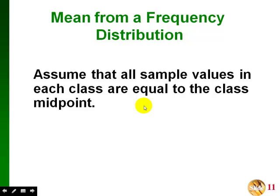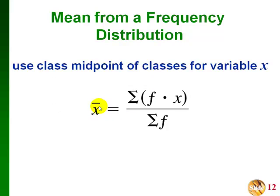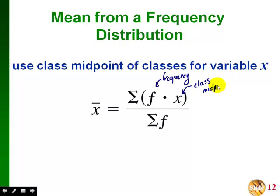If we want to get an idea of what the mean of that data set is, we use the frequency distribution because we don't have all of the data values to average them. For each class in the frequency distribution, we assume that all of the values in that class are equal to the class midpoint. The formula uses F for frequency and X for the class midpoint — multiply frequency times midpoint for each class, add those products together, then divide by the sum of the frequencies.